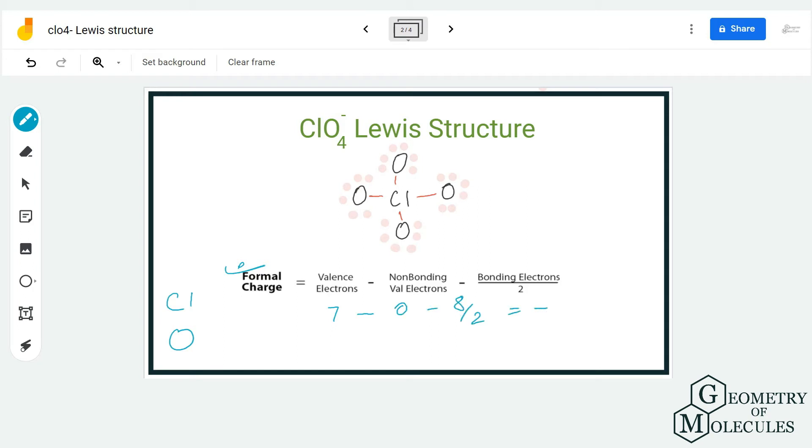For oxygen, it is six valence electrons, out of which six are non-bonding and two are bonding, which means it has a charge of minus one. Now if you arrange the charges around it, you will see that chlorine has plus three, and there are four oxygen atoms having minus one charge. So in total, it will have a minus one charge on this ion.